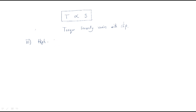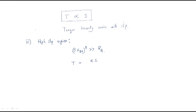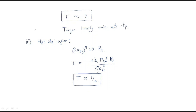In the high slip region, the slip content is high, which means sx₂² will be very high compared with R₂. So we can simplify the torque equation: torque = k·s·E₂²·R₂ / (R₂/s · (sx₂)²). Since both R₂/s and sx₂² are high, the s cancels, and torque becomes inversely proportional to slip in the high slip region.